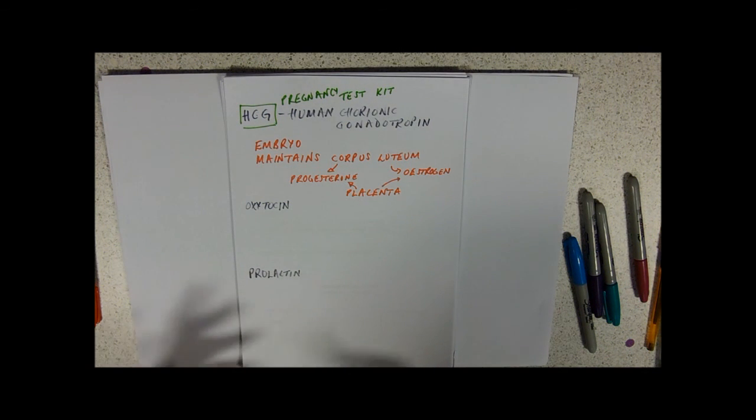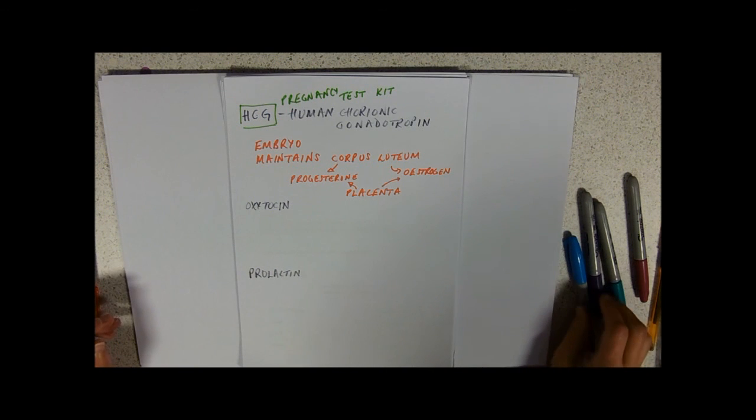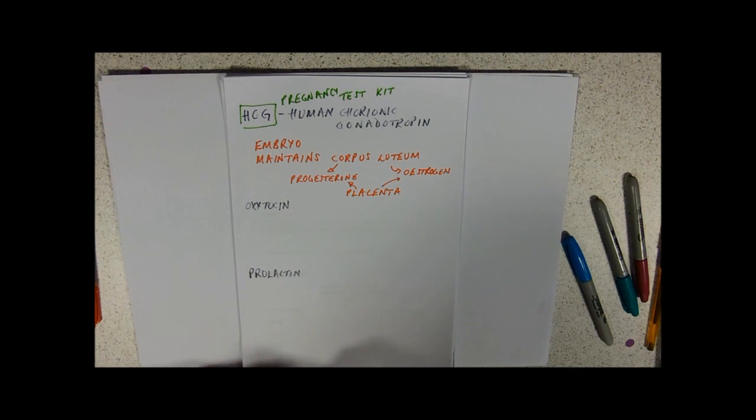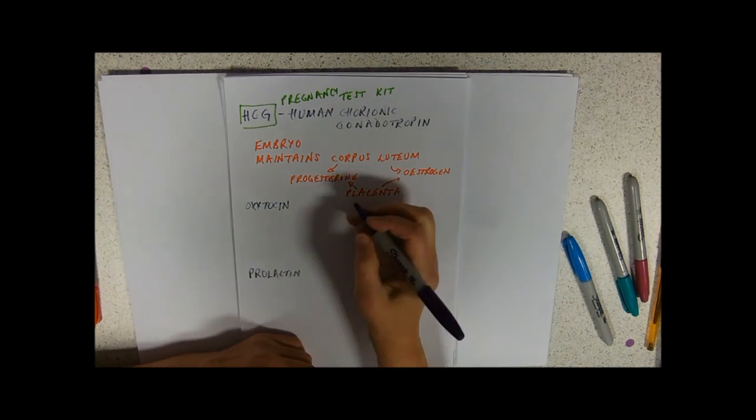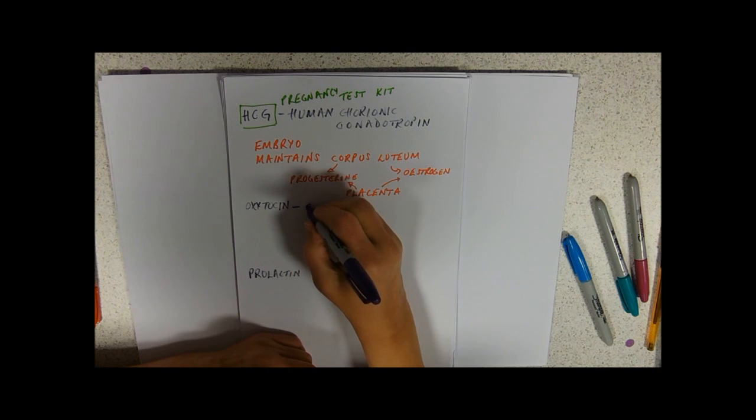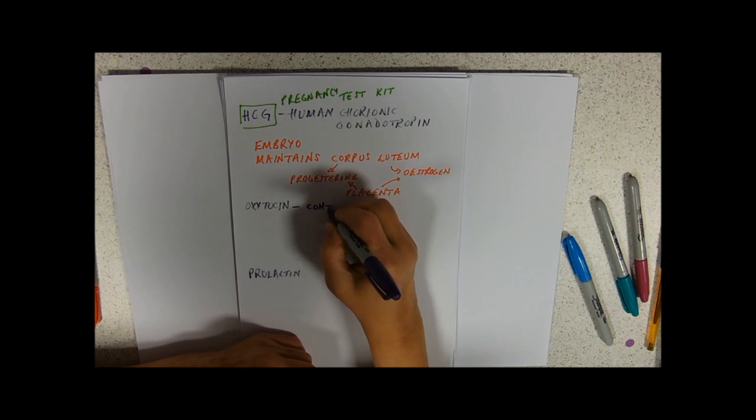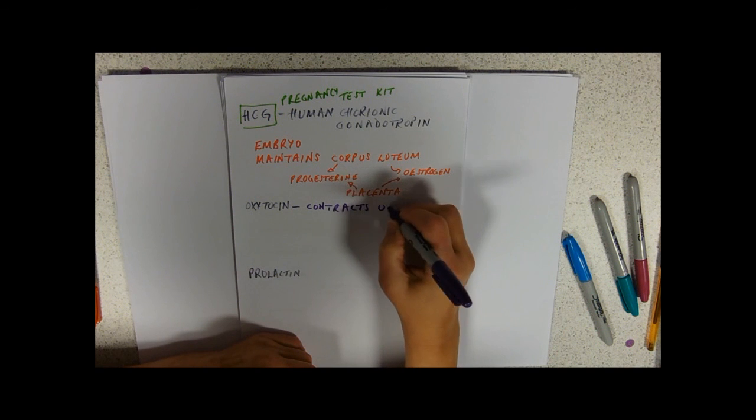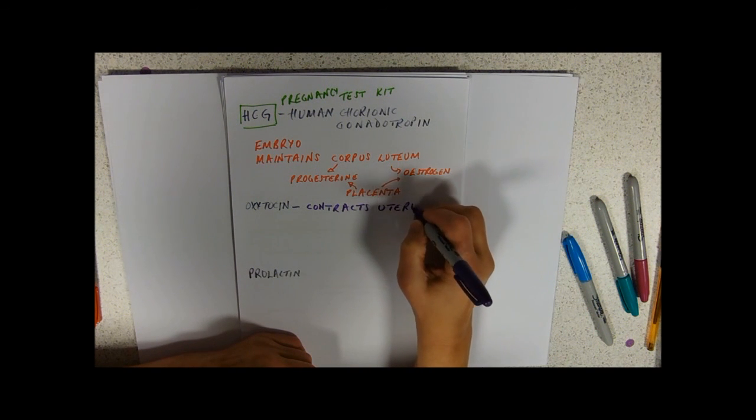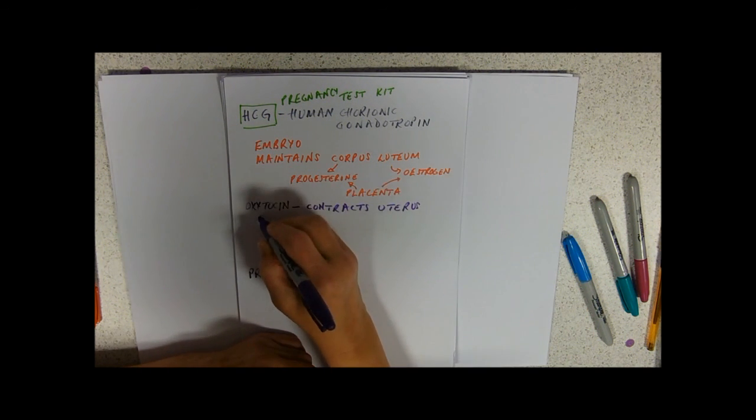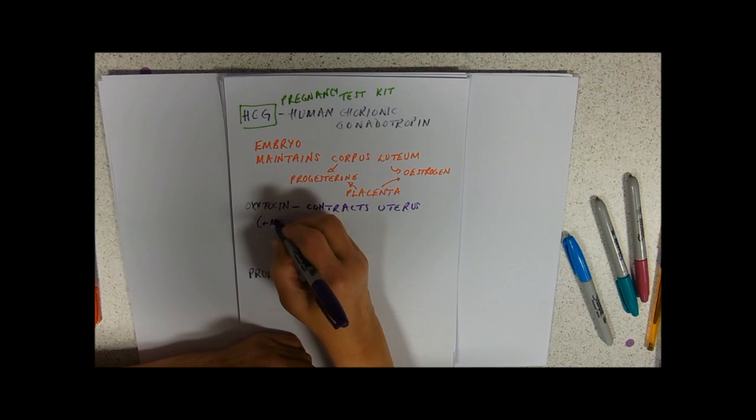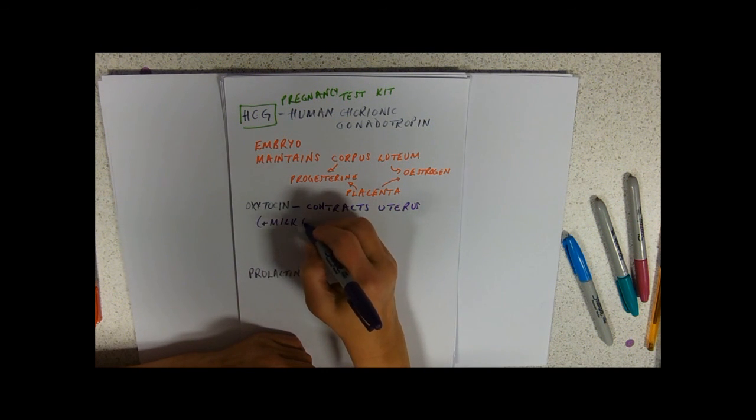So towards the end of the pregnancy, the fetus needs to exit the building, and that's under the control of oxytocin. Oxytocin causes contractions. I'm just going to put in brackets there, and milk glands.